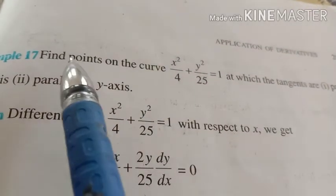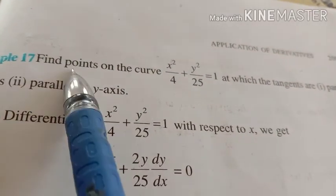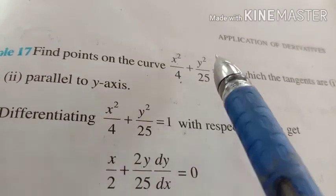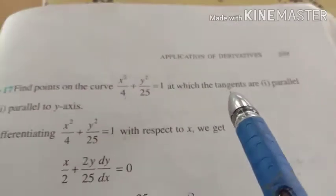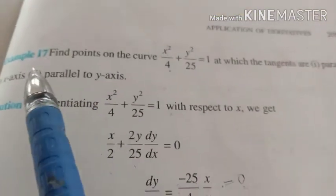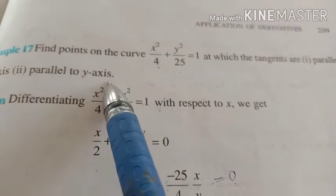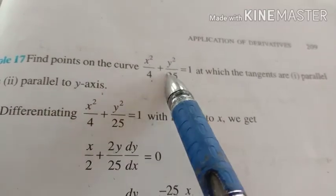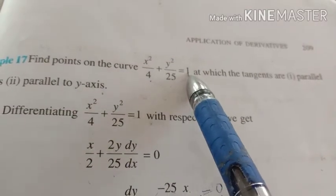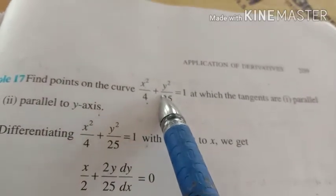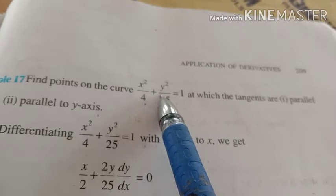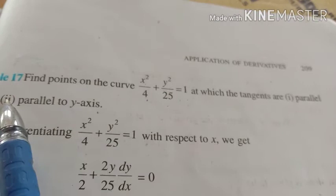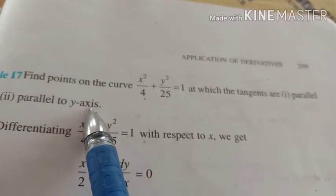Now see another question — this is also Example 17 in your textbook. Find points on the curve x²/4 + y²/25 = 1 at which the tangents are parallel to x-axis and parallel to y-axis. The question asks us to find tangent lines to this curve and determine at which points those tangent lines are parallel to the x-axis and also parallel to the y-axis.